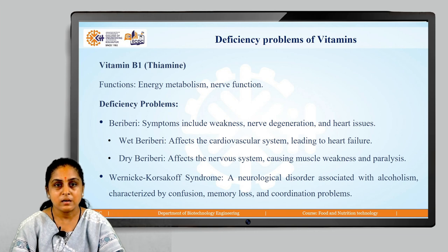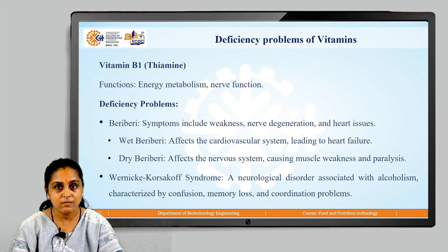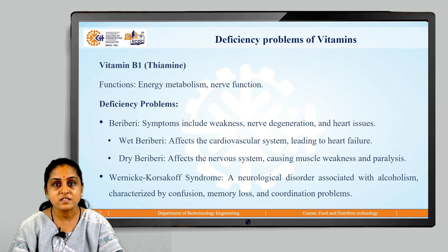Beriberi is one disease wherein symptoms like weakness, nerve degeneration, and heart issues are seen. Beriberi has two classifications: wet beriberi and dry beriberi. Wet beriberi affects the cardiovascular system in our body, which can lead to heart failure. Dry beriberi affects the nervous system, causing muscle weakness and leading to paralysis.